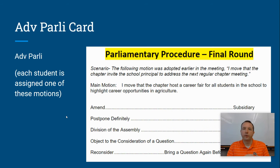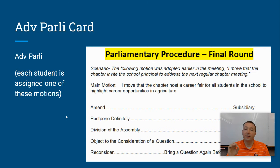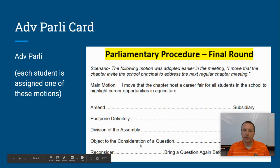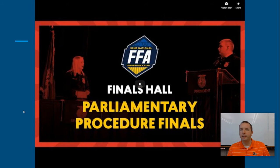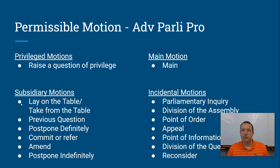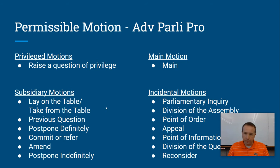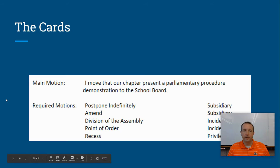Here's an example card. One thing to know is that when you look for examples online, National FFA uses the fullest set of motions — 23 or 24 — that are in Robert's Rules of Order. We are not doing that. We're only using the motions we've always taught, which are the core, most common ones. So if you see things like 'object to the consideration of a question,' we don't use that one. Just be aware as you look for examples, you'll find a few things like that. Here again is the list of permissible motions — the ones we've always used in our competition.